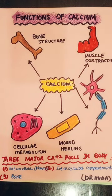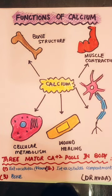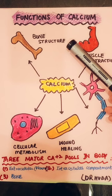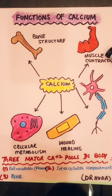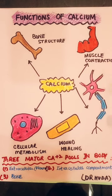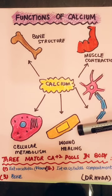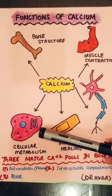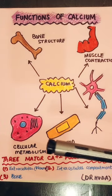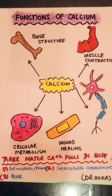Starting with calcium, the calcium functions are as shown in the diagram. Calcium is very important for maintaining bone structure and keeping bones strengthened. It helps in muscle contraction, nerve conduction impulses, wound healing, and acts at the cellular level for metabolism. Enzyme co-factors are also dependent on calcium for their proper functioning.